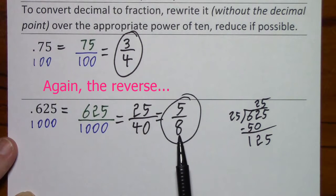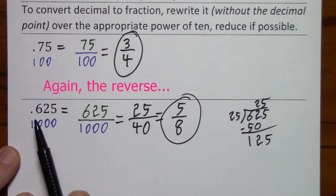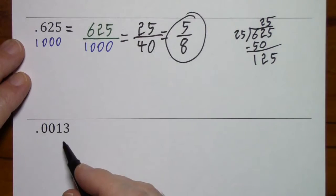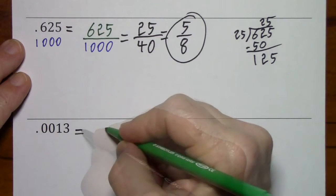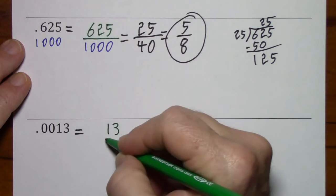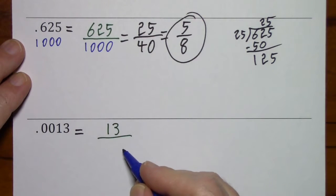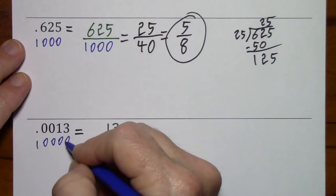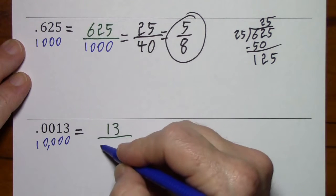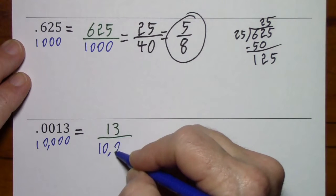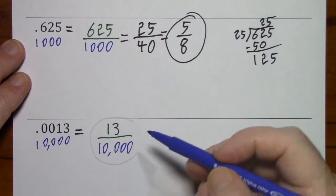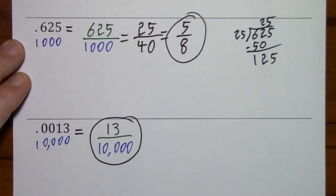You might recall we started with five-eighths earlier in the video and ended up with six hundred twenty-five thousandths. For the next example, write thirteen over ten thousand. Fortunately there's no common factor, so that's in simplest form.